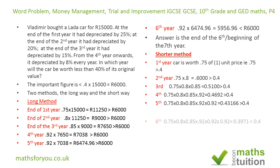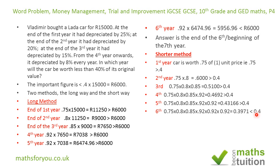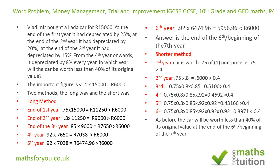At the end of the sixth year, the value is 0.92 times 0.43166, giving 0.3971 — which is less than 0.4. So as long as you keep track of what you're doing — applying 0.75 for year one, then 0.85, then 0.92 from year four onwards — and check against 0.4, you'll find the answer. The car will be worth less than 40% of its original price at the end of the sixth year / beginning of the seventh year.